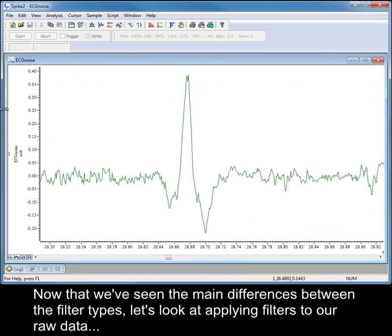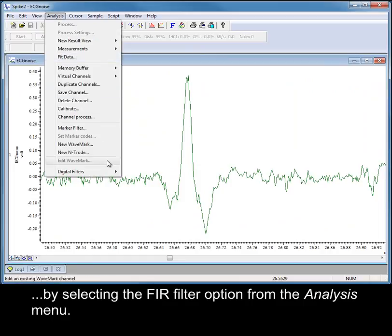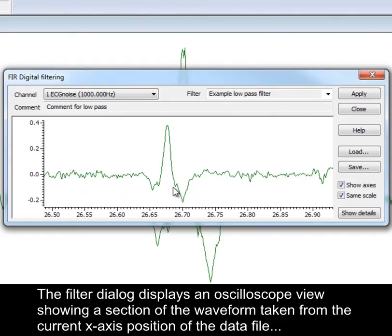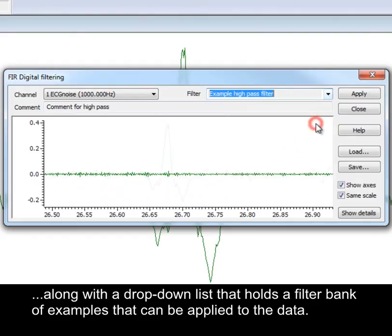Now that we have seen the main differences between the filter types, let's look at applying filters to our raw data by selecting the FIR filter option from the analysis menu. The filter dialogue displays an oscilloscope view showing a section of the waveform taken from the current x-axis position of the data file, along with the drop-down list that holds a filter bank of examples that can be applied to the data.